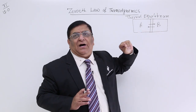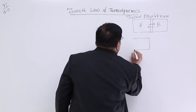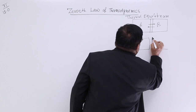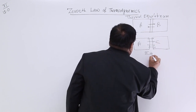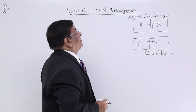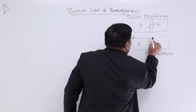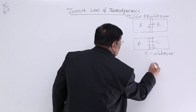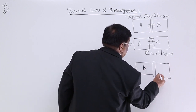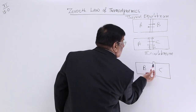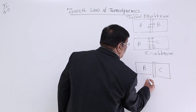So A and B are in thermal equilibrium. Now we have another scenario where A and C are also in equilibrium. System A is in equilibrium with B, and system A is also in equilibrium with C. Now if we bring B and C together across a diathermic wall, what we find is that there is no exchange of heat — they are already in equilibrium.